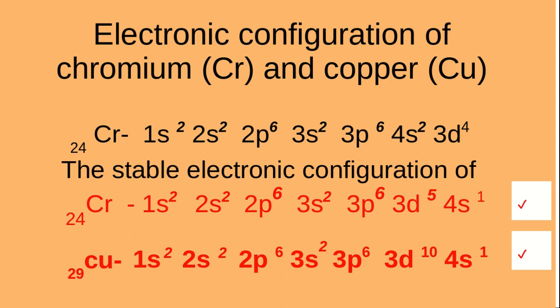So the stable electronic configuration of chromium is 1S2, 2S2, 2P6, 3S2, 3P6, 3D5, 4S1.